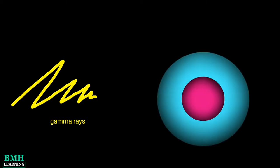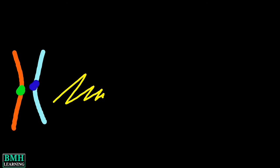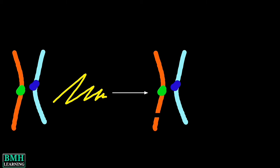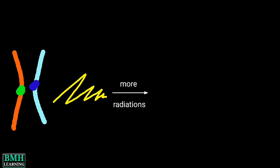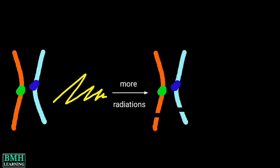Before we talk about the DCA, we need to know what a Dicentric chromosome is. When ionizing radiation, specifically gamma radiation, passes through the body, it interacts with various organelles including the nucleus. Chromosomes are present in the nucleus of the cell, and the interaction of radiation with these chromosomes causes breaks. Generally, the broken pieces of an individual chromosome join back and revert to the original position. However, in the event of higher exposure to radiation, such breaks may occur in more than one chromosome.